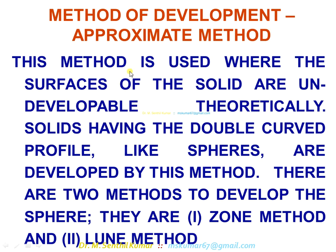The fourth method is the approximate method. This method is used where the surfaces of the solid are undevelopable theoretically. Solids having a double curved profile, like spheres or portions of a sphere, are developed by this method. There are two methods to develop the sphere: the zone method and the lune method.